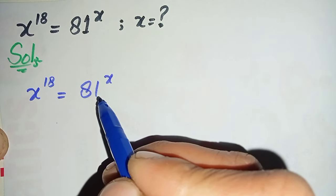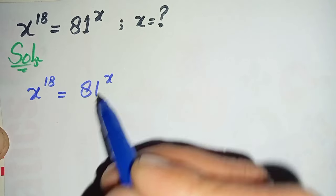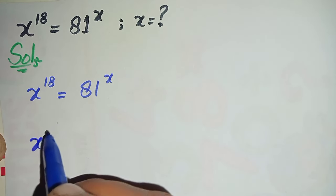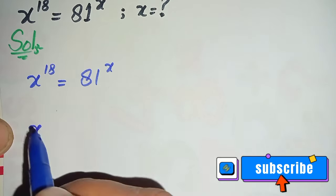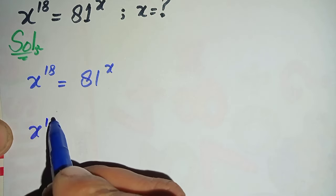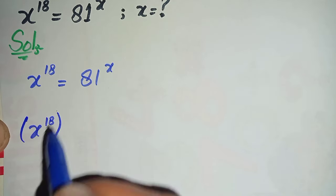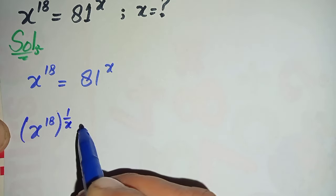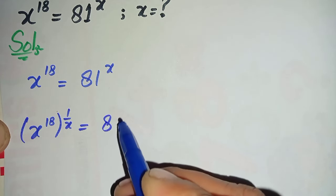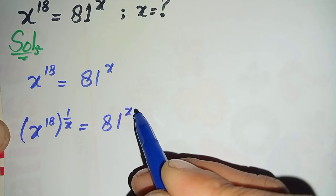To eliminate this x, we will take 1 over x in the power on both sides. So let us take x raised to power 18, raised to the power 1 over x on both sides. That gives x raised to power 18 raised to power 1 over x is equal to 81 raised to power x times 1 over x.